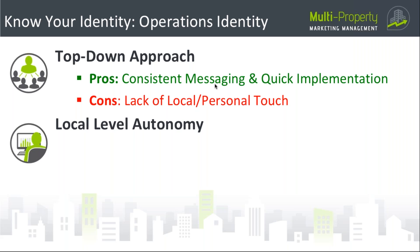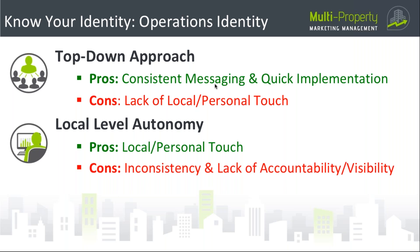The second operations identity is local level autonomy, where marketing decisions are made at the property level by the GM or DOS. The pros are that local and personal touch — they know the community news, events, and what's going on day-to-day. The cons are inconsistent messaging and lack of accountability or visibility, as it's much harder to manage when you have ten different GMs all doing their own things at different properties.